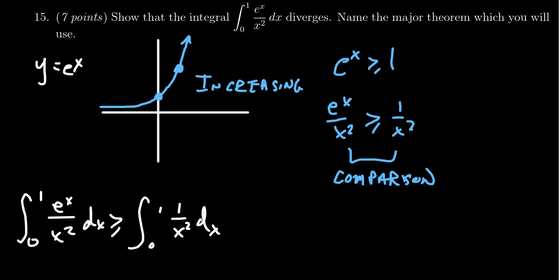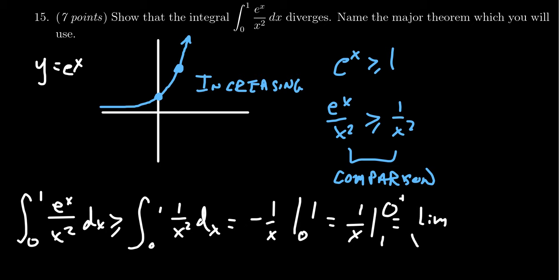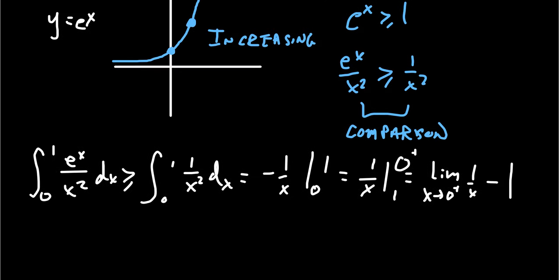As we saw already, this is a much easier integral. You end up with negative 1 over x evaluated from 0 to 1. Flipping the direction, you get 1 over x evaluated from 1 to 0. As you approach 0 from the right, you get the limit as x approaches 0 from the right of 1 over x. When you plug in 1 there's no issue — you get minus 1. But the first limit turns out to be infinity, giving infinity minus 1, which is itself infinity.